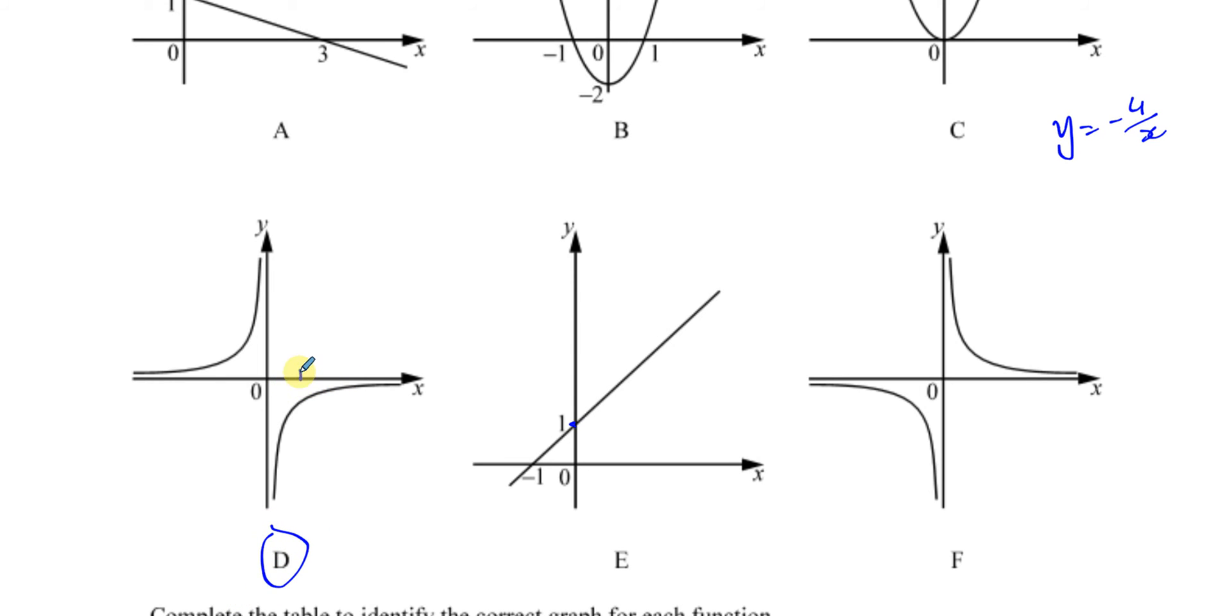Because when x is positive, y is going to be negative. When x is 1, y is going to be -4. When x is negative, y is going to be positive. If it was this graph, then when x is positive, y would also be positive.